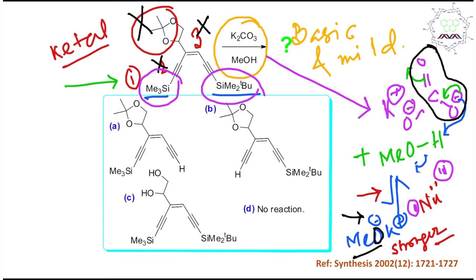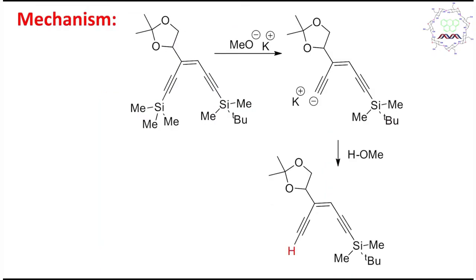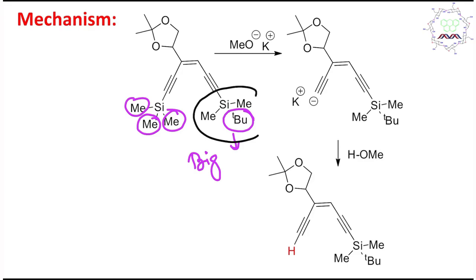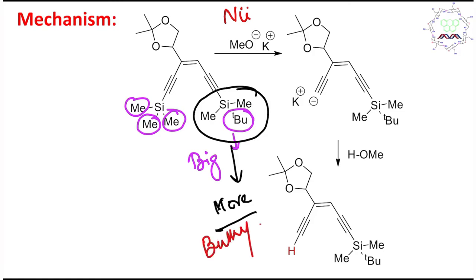The reaction occurs between MeO⁻ and one of the silicon centers. Looking at the two silyl groups: TMS has three methyl groups (smaller), while TBDMS has a tert-butyl group (a large, bulky group). Therefore, the nucleophile MeO⁻ attacks the less hindered TMS silicon center. It cannot attack the TBDMS silicon because of its steric bulk.